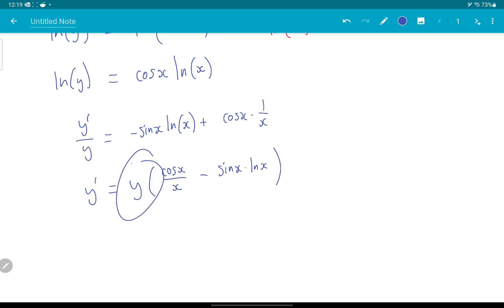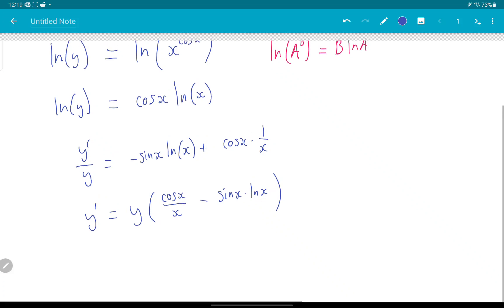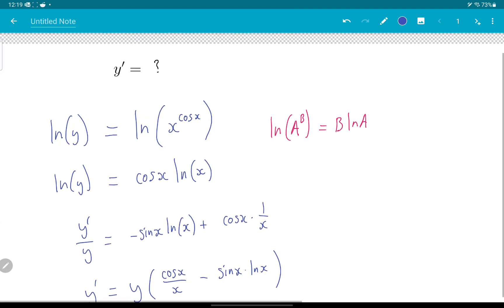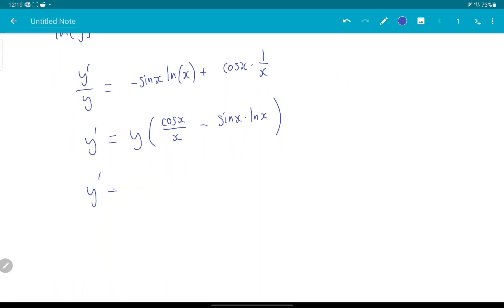And we have a y in our answer, so we should try to put that in terms of x. How can we do that? Well, I'll go back upstairs and see that y is x to the power of cos x. So y prime is x to the power of cos x times all this bracket. And there we go.